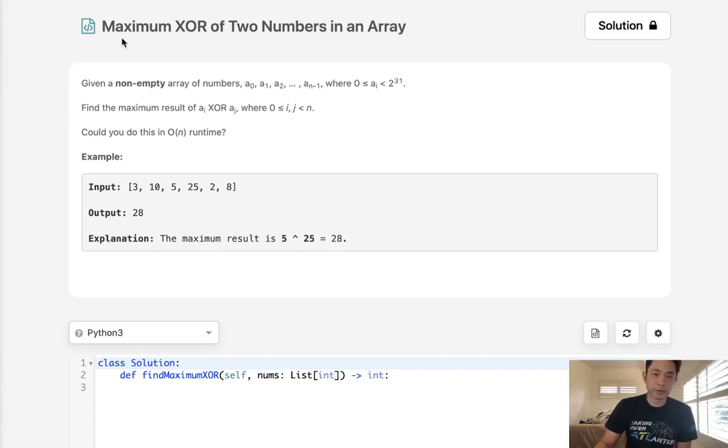Welcome to September's LeetCode Challenge. Today's problem is maximum XOR of two numbers in an array.